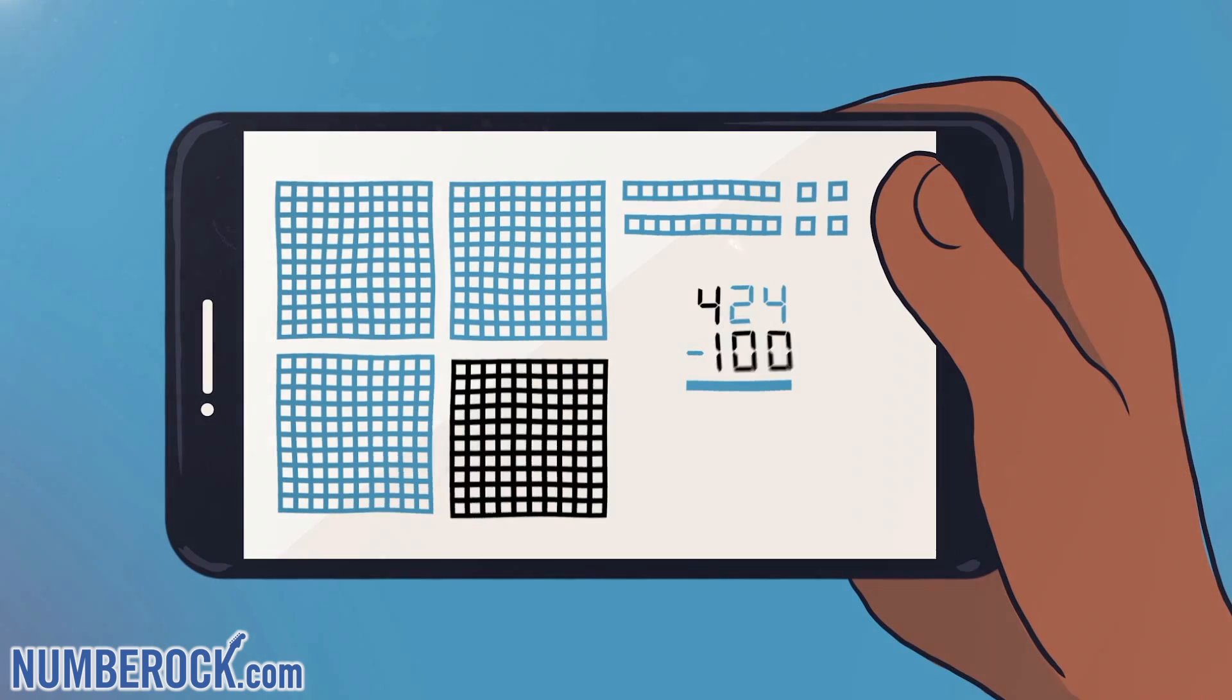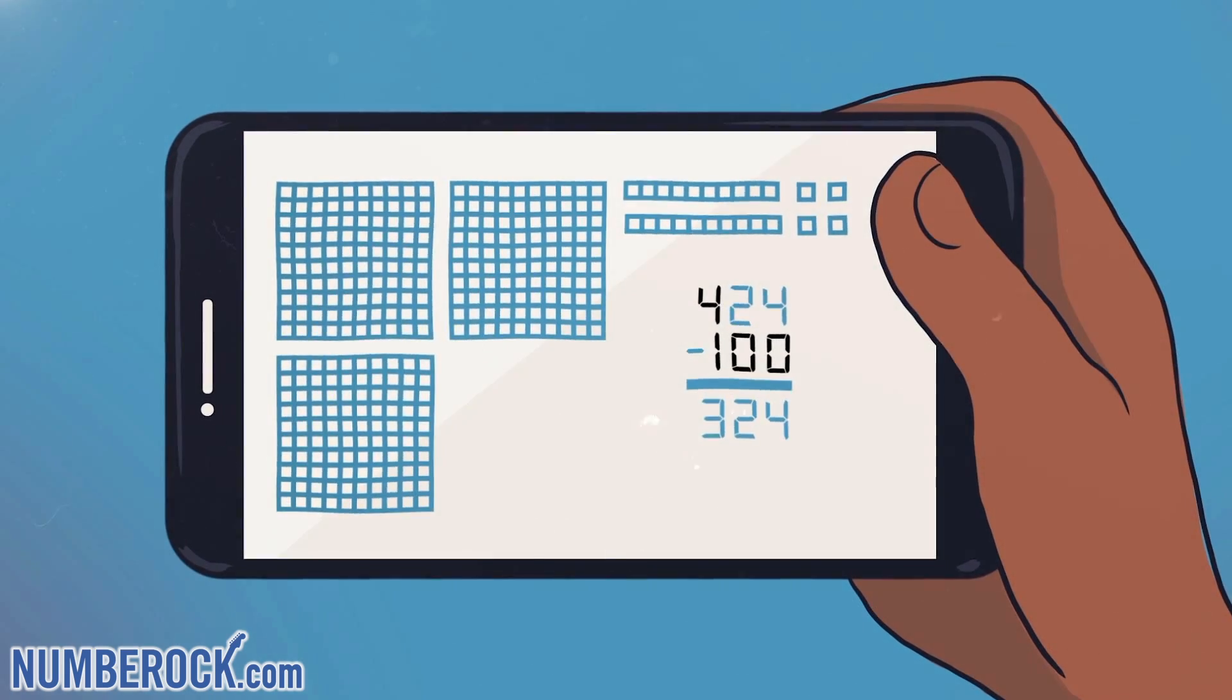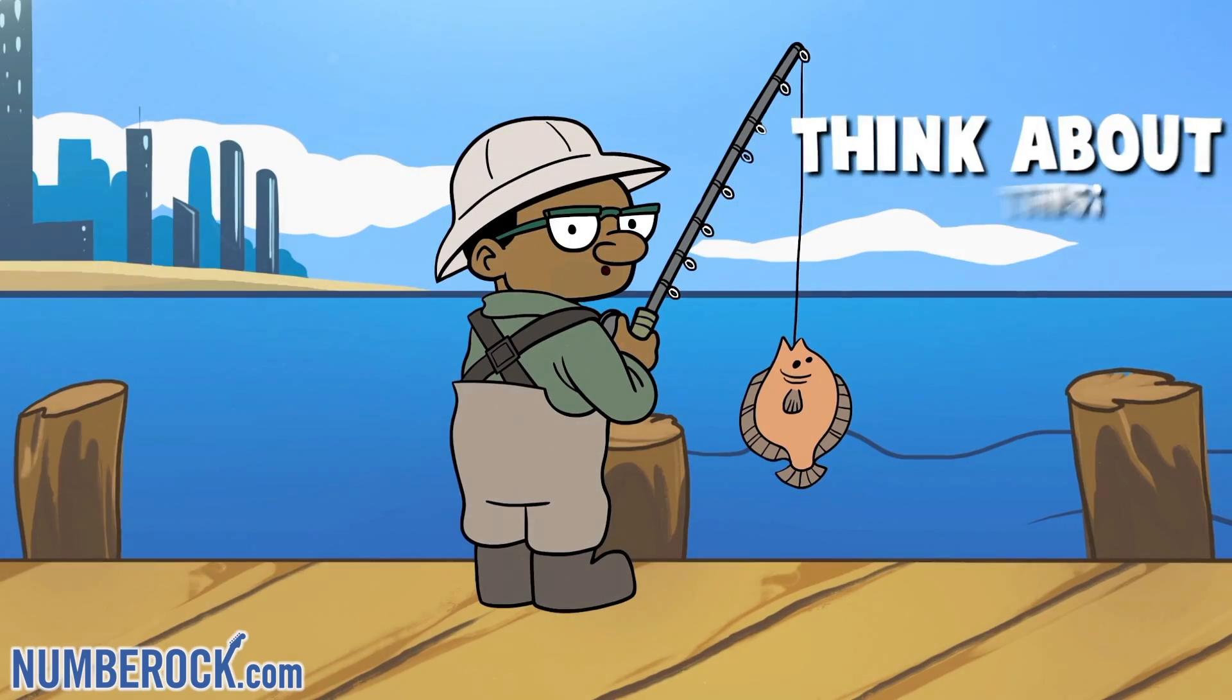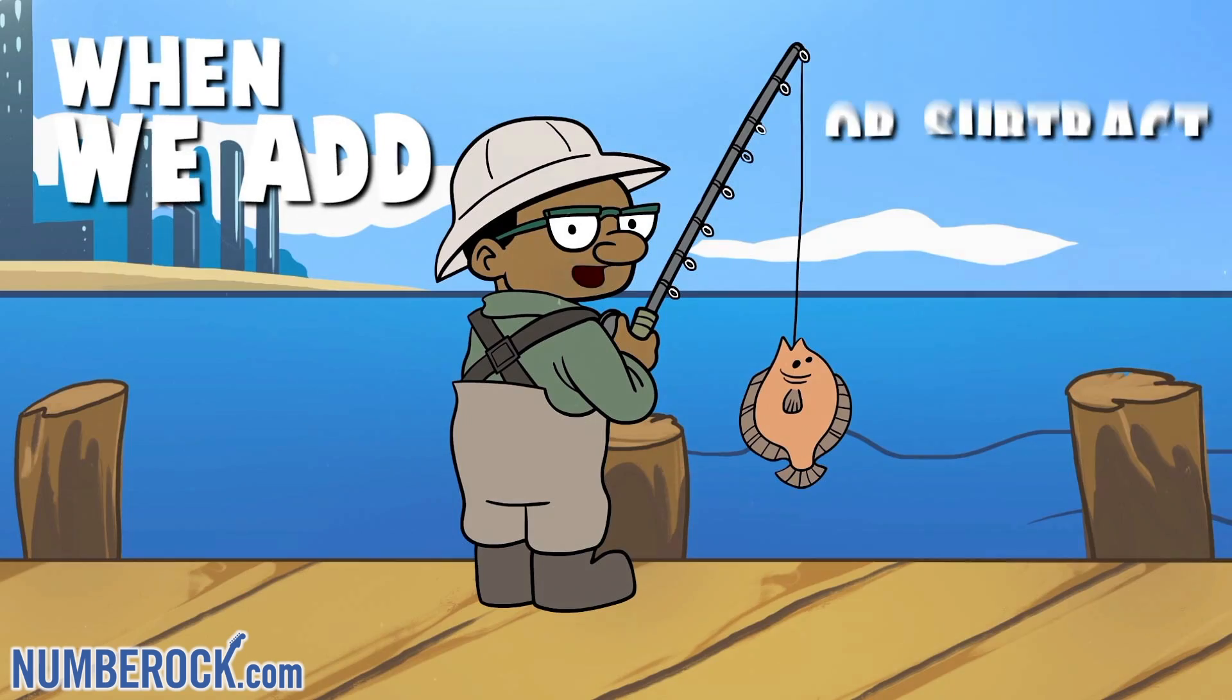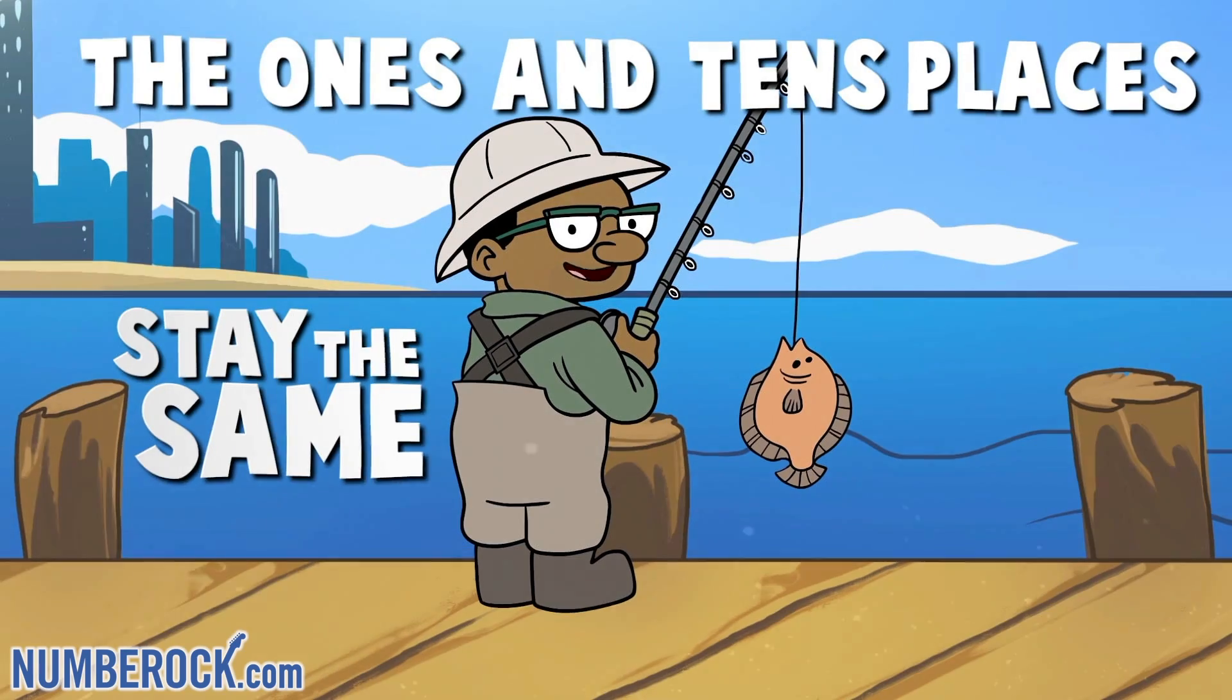Now I'll take away 100 with subtraction. On my screen I see the difference is 324 the same number as before. Think about this, when we add or subtract by 100 the one's and the ten's places stay the same.